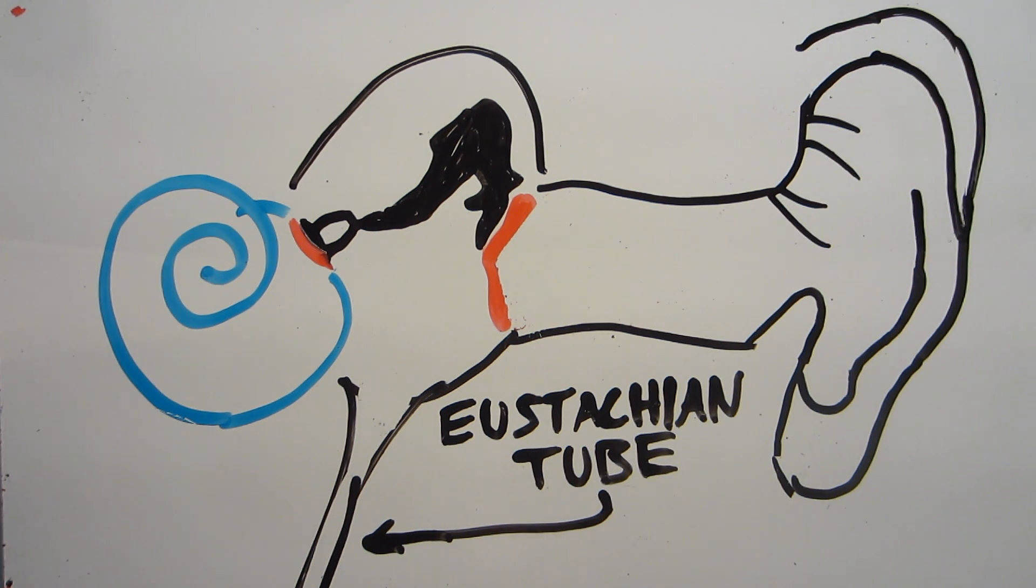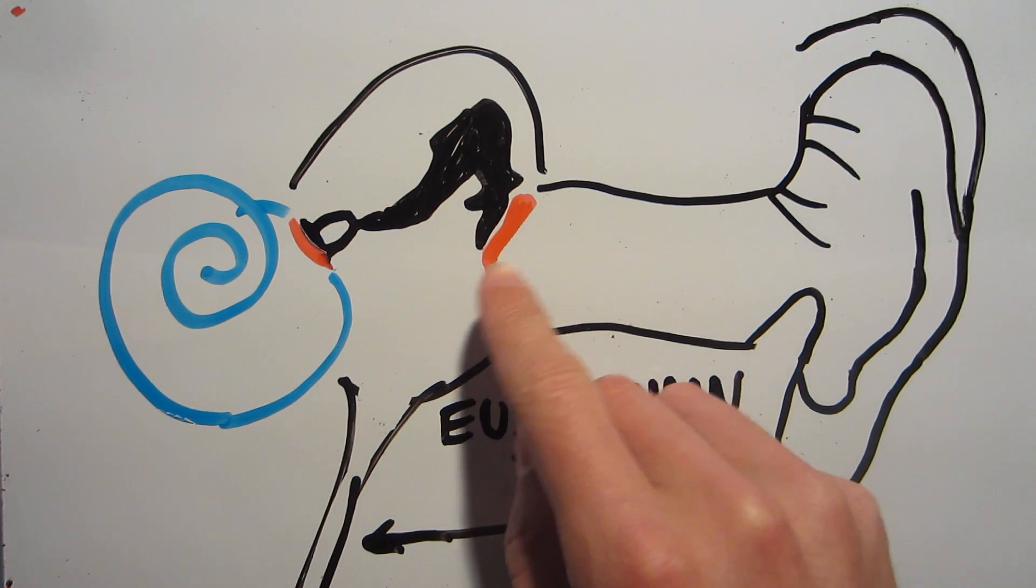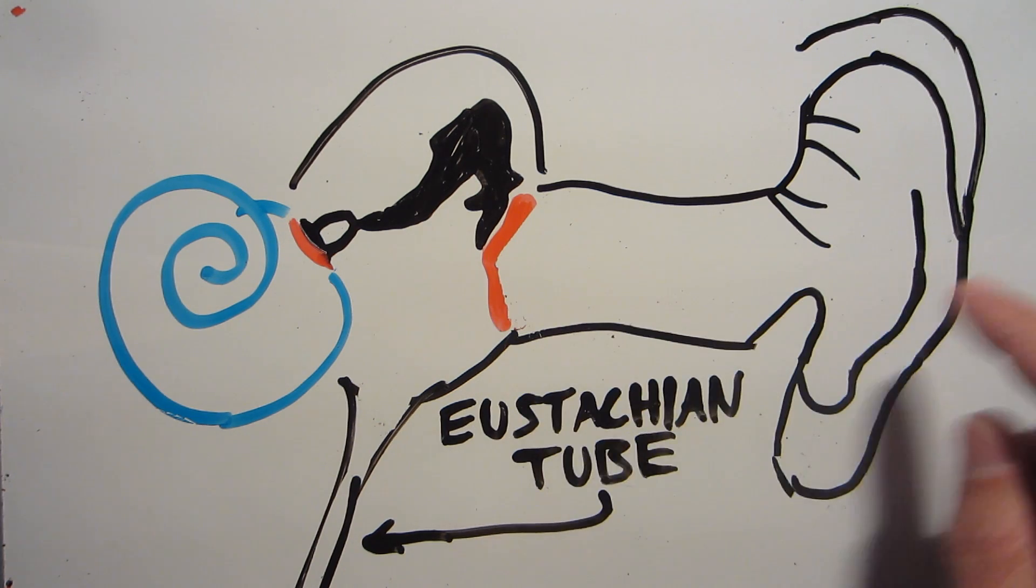What you might not realize is that that popping noise isn't just in your head. In fact, you can hear someone else's. Try putting an ear against a friend's and having them swallow. You should be able to hear a little click as their eardrum shudders from the disturbance in their middle ear. It's actually shuddering enough to act like a tiny speaker and send sound waves into yours.